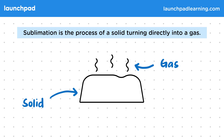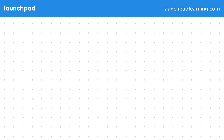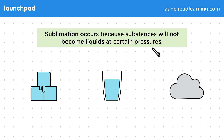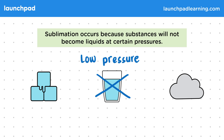So what's the difference between sublimation and other changes of state? Sublimation occurs because substances will not become liquids at certain pressures. Remember that ice, water, and water vapour are the same substance in different states. But at low pressure, the liquid state of water cannot exist.